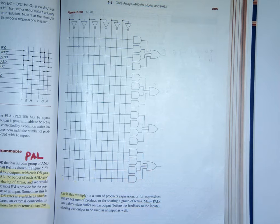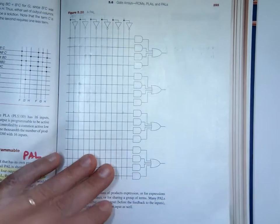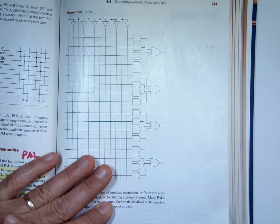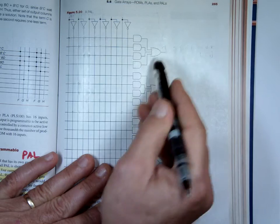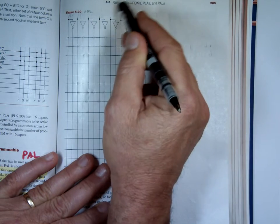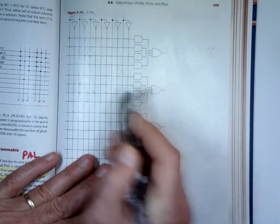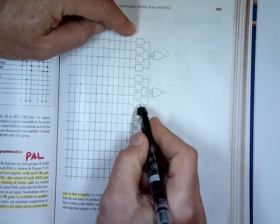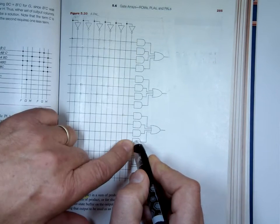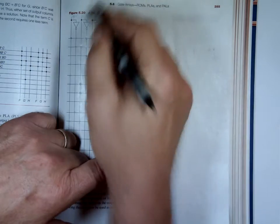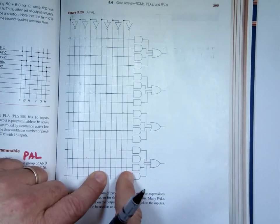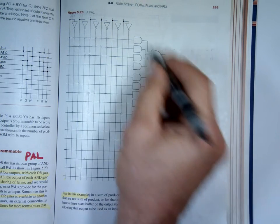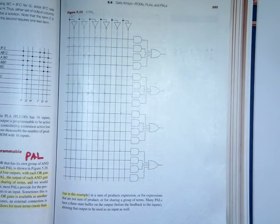Sometimes if you need more than four AND gates, what do you do? You might take four of them, attach it to an output, and make that as one input. Then grab that input, and that's how you can get up to eight or even twelve AND gates for one output by looping outputs back as inputs. Each function can have up to four AND gates; if you need more, you have to be creative.